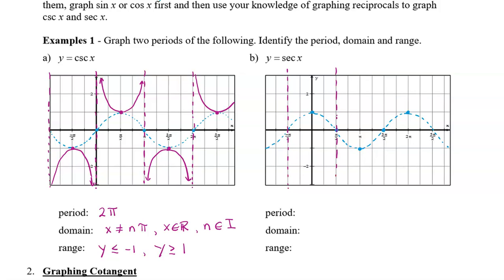Asymptotes are at positive pi over two, three pi over two, and five pi over two — wherever the zeros were. Then we have our negative ones and positive ones as invariant points. Just like with cosecant, we draw our U's and upside-down U's. You'll see that the secant graph looks just like the cosecant graph, but it's shifted over by pi over two.